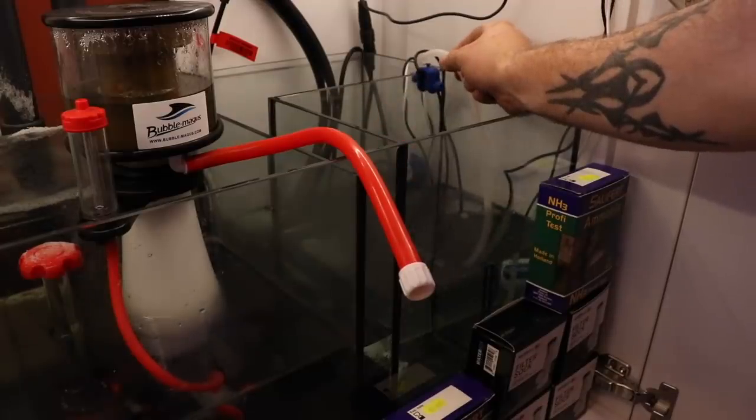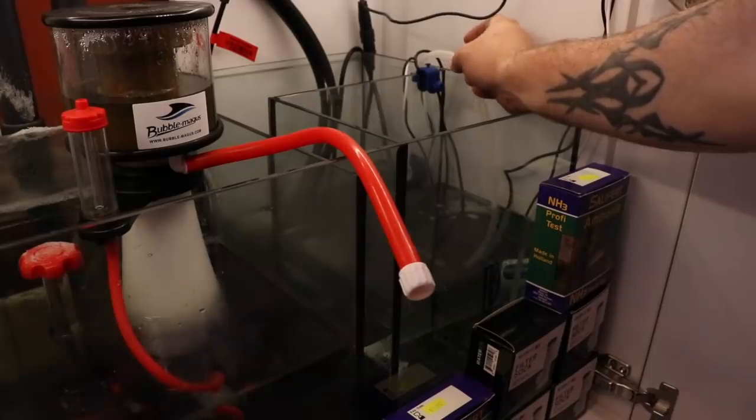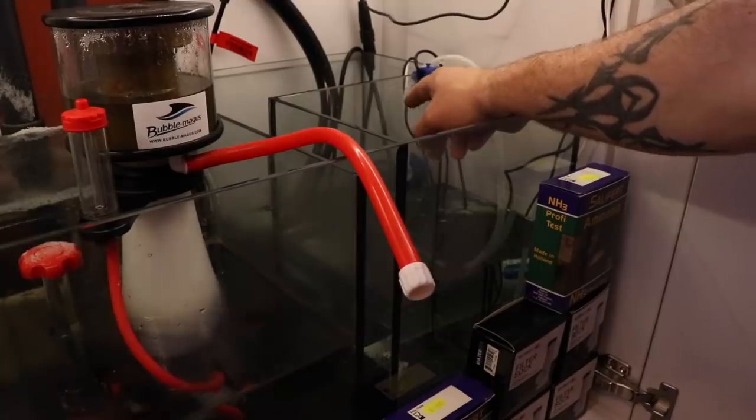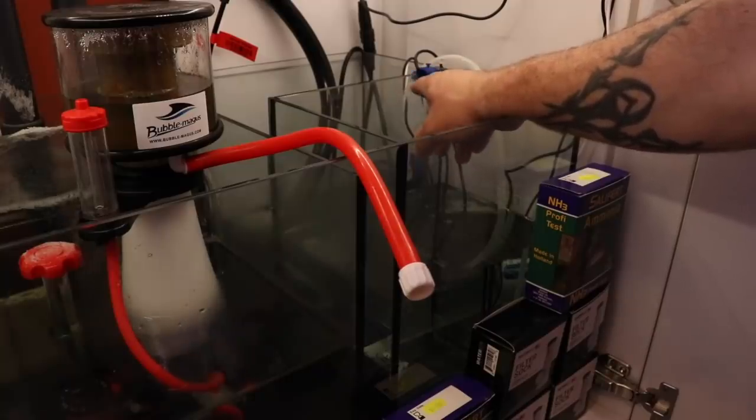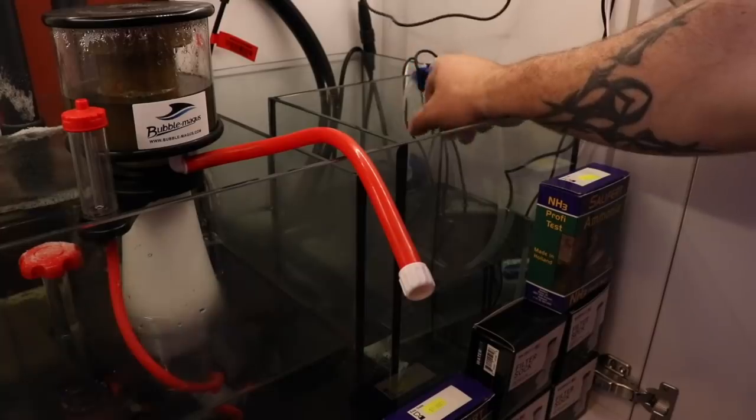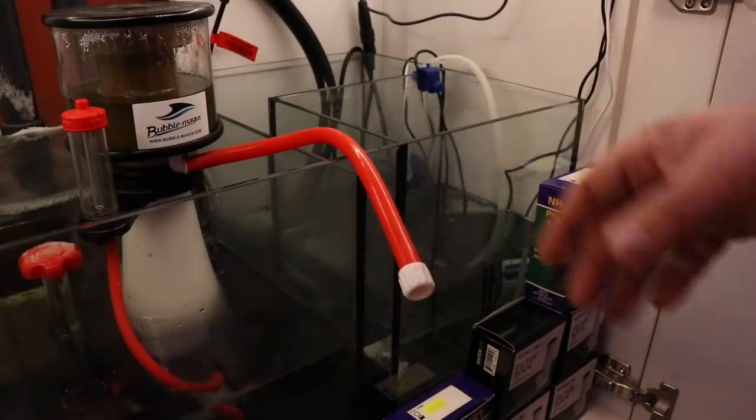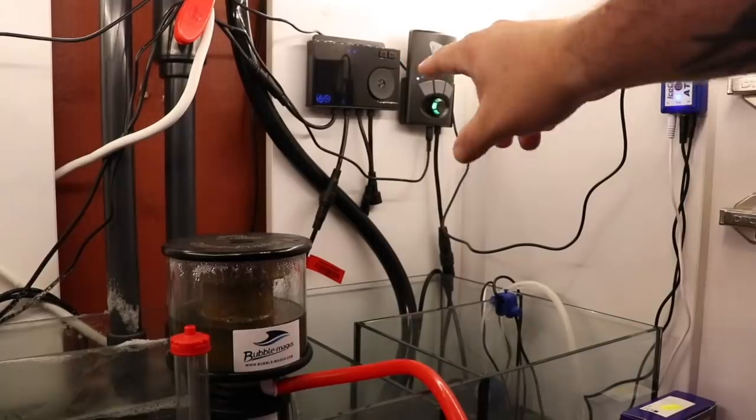I am going to move this hose probably to this section over here because when it turns on, it turns on for a split second and sometimes it's creating bubbles. I don't have it all the way down here because that potentially could create a siphon. There's a siphon break that comes with the auto top-off I didn't use. I need to make sure that I have that hose well above the water line.